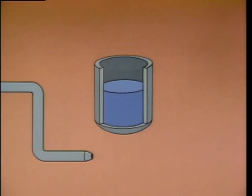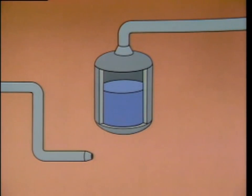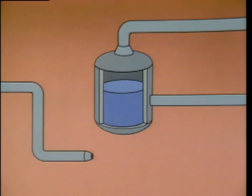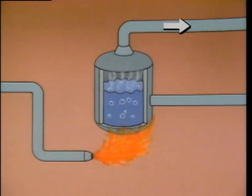First, we'll cover the shell to prevent the steam from escaping. Then we'll add a steam outlet line to collect the steam and route it to where it can be used. We also need a way to supply water to the shell so it won't boil dry, so we'll add a feed water line. It will provide a continuous supply of water to replace the water that's changed to steam. Now we have a boiler that can heat water, produce steam, and route it out of the shell to where it's required.